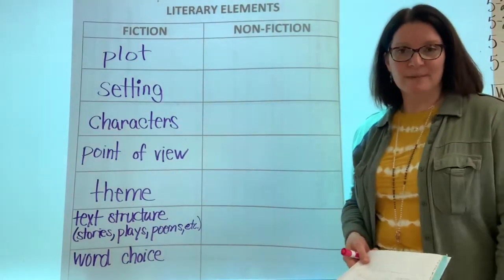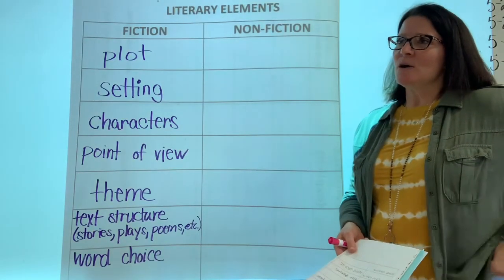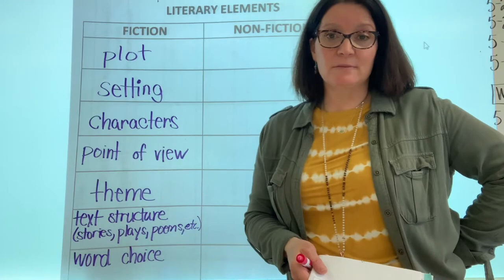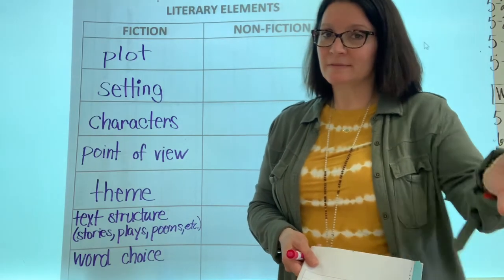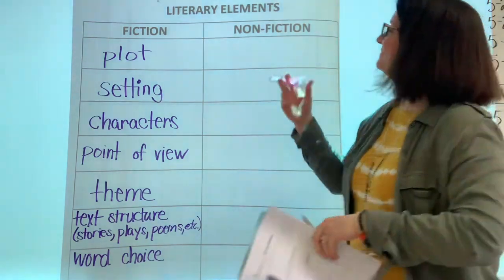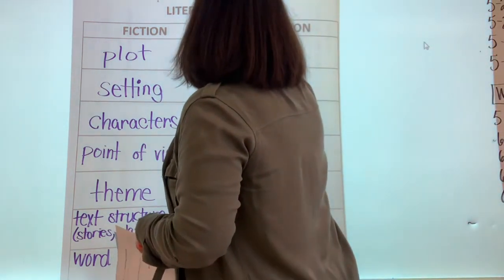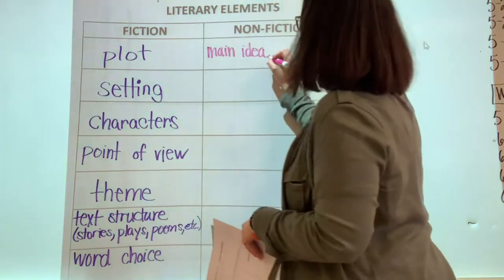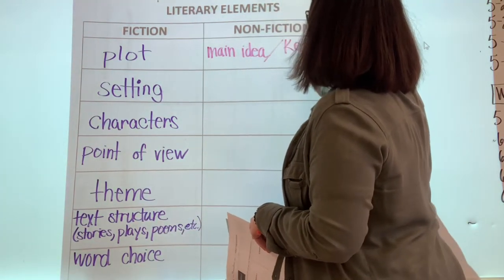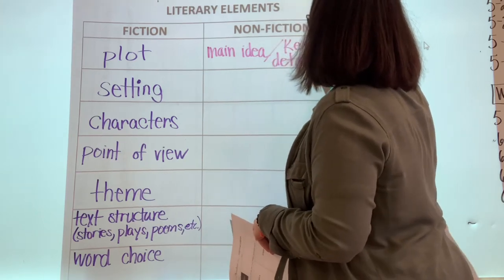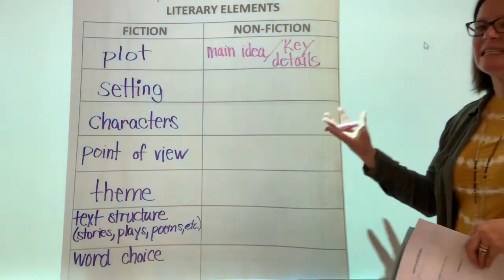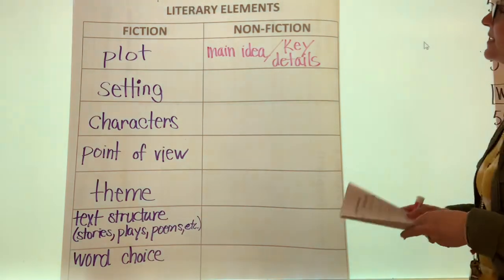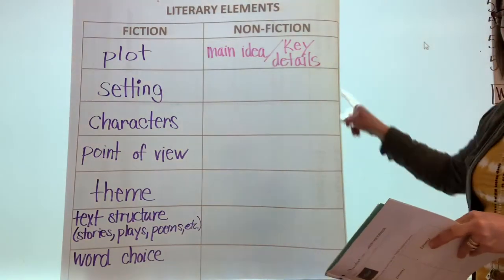Let's start with this one. Your teachers ask you this question after you read a nonfiction text: Who or what is this passage mostly about? What are we trying to find out? You got it — it's the main idea. But we don't just want to know the main idea; we also want to know the key details. So we're going to write both of those here as literary elements. Our first one is main idea and key details. Add that to your chart, please.